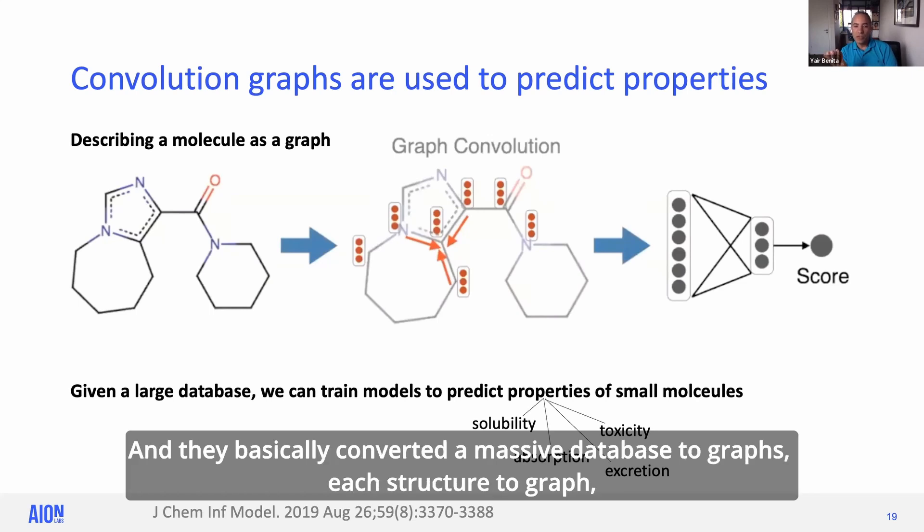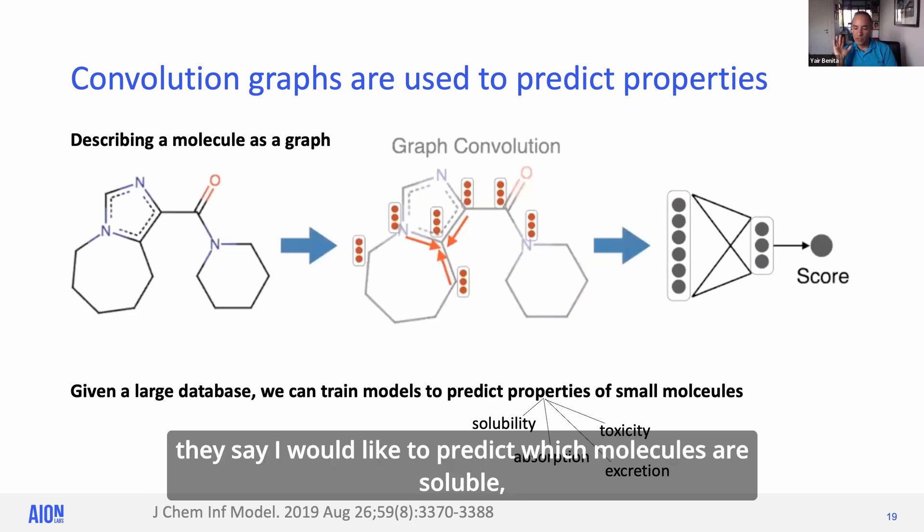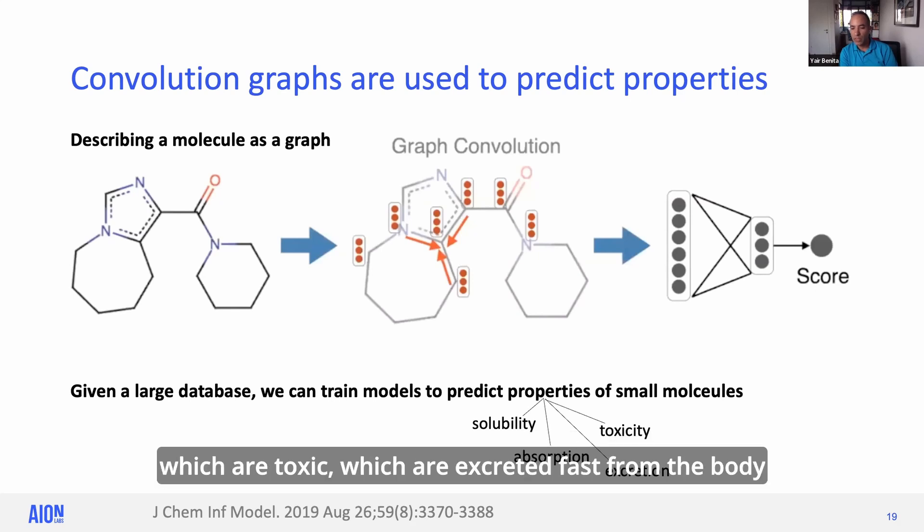And they basically converted a massive database to graphs, each structure to a graph. And then what they want is to train a model to predict a property. They say, I would like to predict which molecules are soluble, which are toxic, which are excreted fast from the body or not, based on data that's available in those databases.